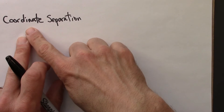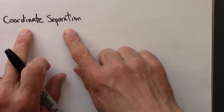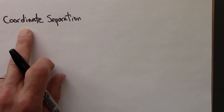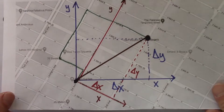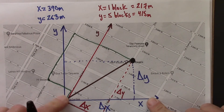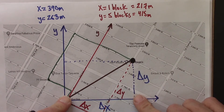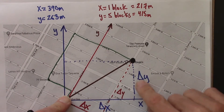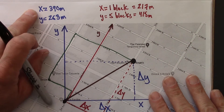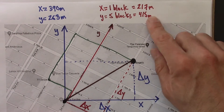One of the ways we measured the separation between two points in space on a map was by using coordinates — we call that the coordinate separation. We had our two points, drew on coordinates, and used the coordinate axes to read the coordinates. So we might read 390, 263, or in red, 217, 415.